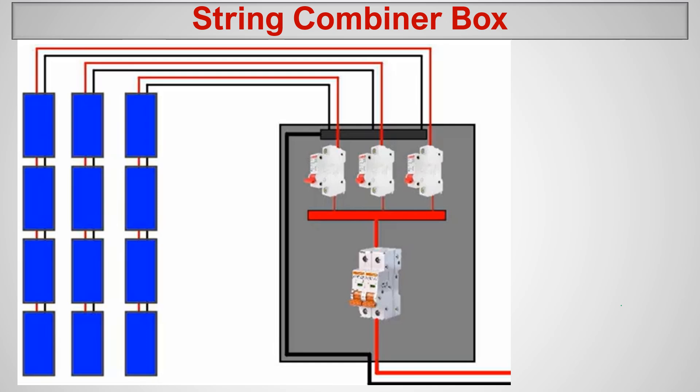Looking in detail at what is happening inside the combiner box: string one, string two, and string three are coming in, and we have protection devices inside. We have circuit breakers — one circuit breaker per string. These circuit breakers individually protect each string. Let's say this string is 10 amperes, so 10 amperes come from this string and another 10 amperes from the other string.